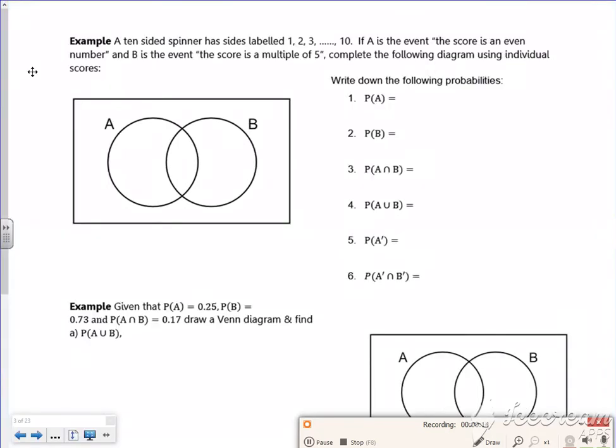Right, so let's have a look at this one. We've got a 10-sided spinner, it has sides labeled 1, 2, 3, all the way to 10. A is that it's an even number, B is a multiple of 5, so complete it.